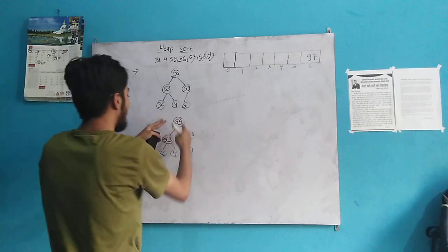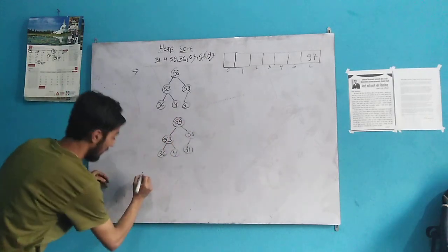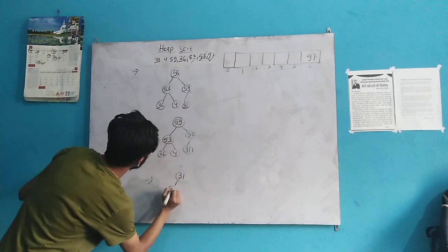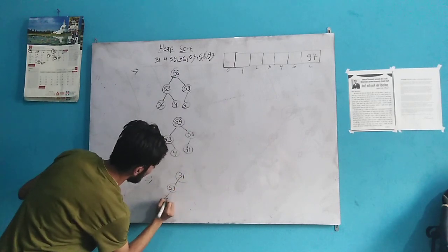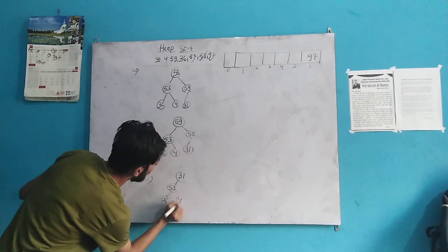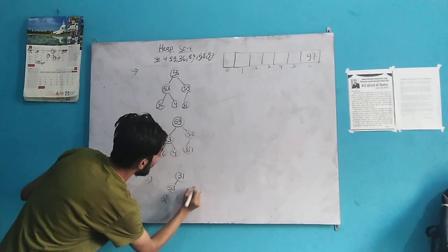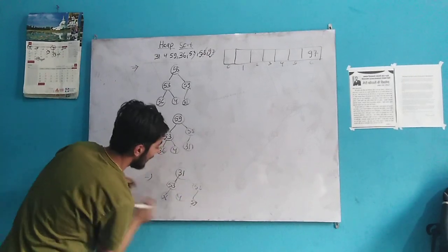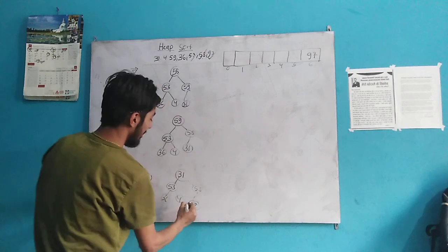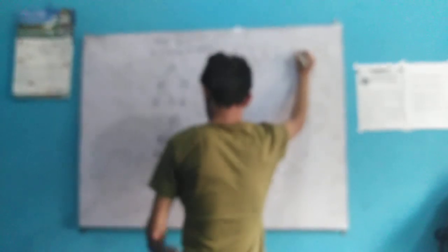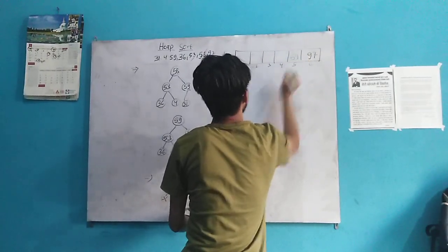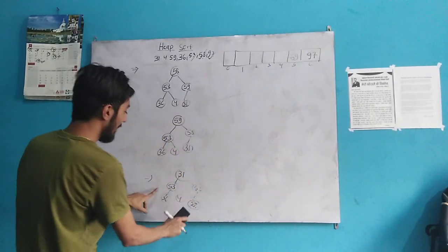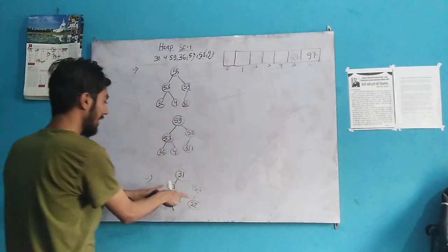We again swap this root with the last element. It becomes: 31, 53, 36, 4, 58, and here is 59. We write 59 here as the second last sorted element. Again, this is not a maximum heap, so we again need to make it a maximum heap by ensuring parent element has a greater value than the child element.